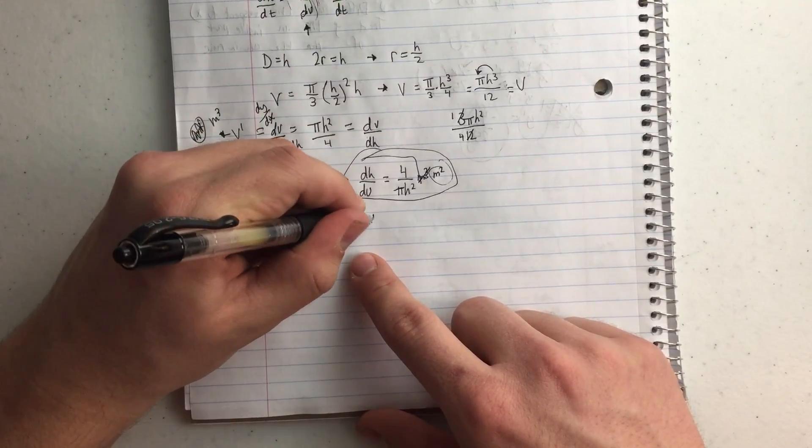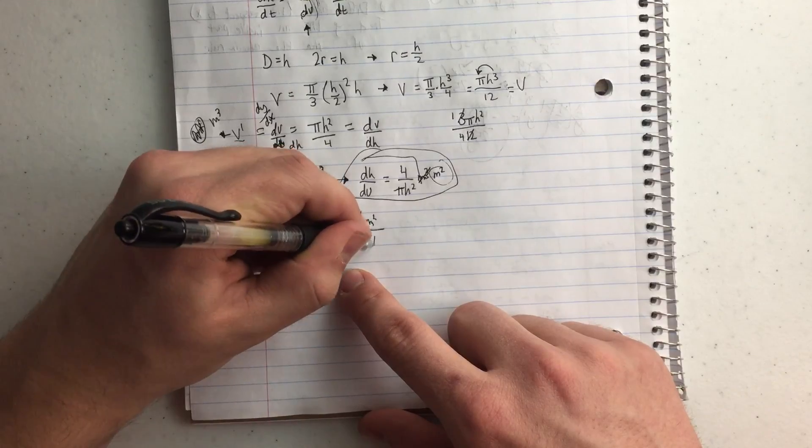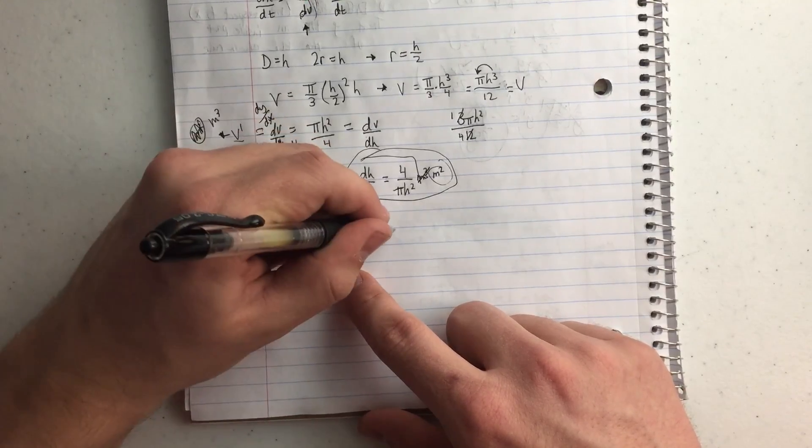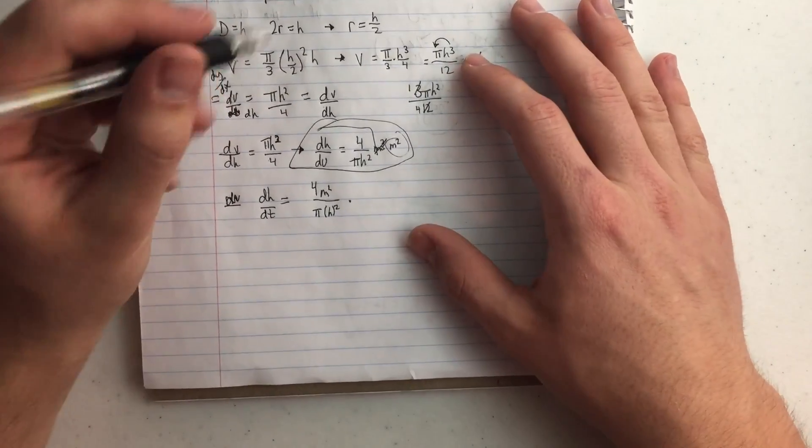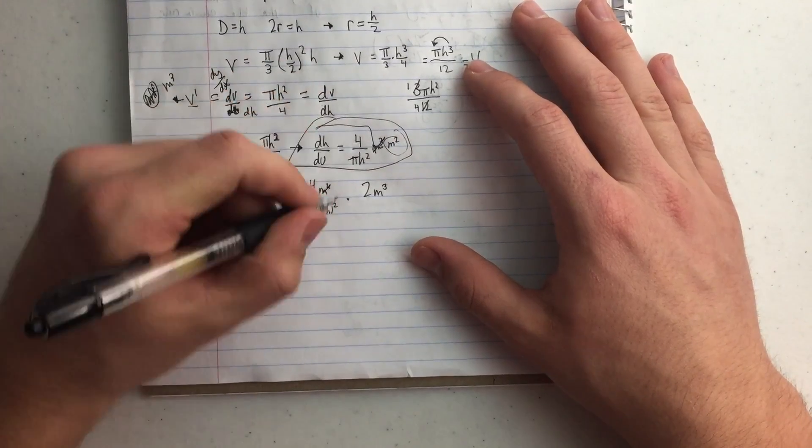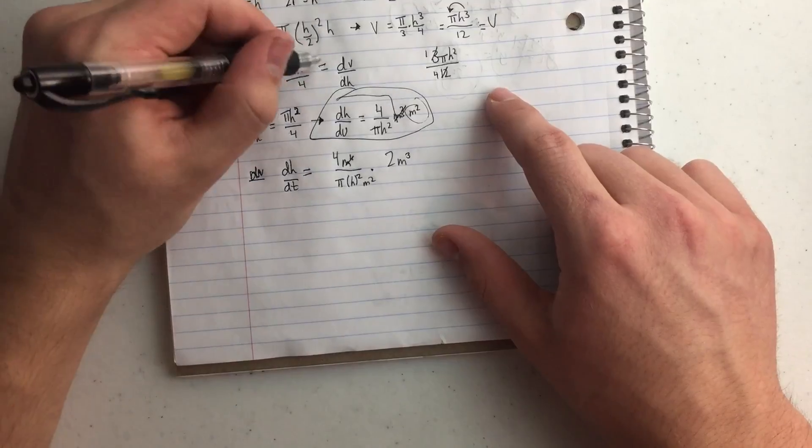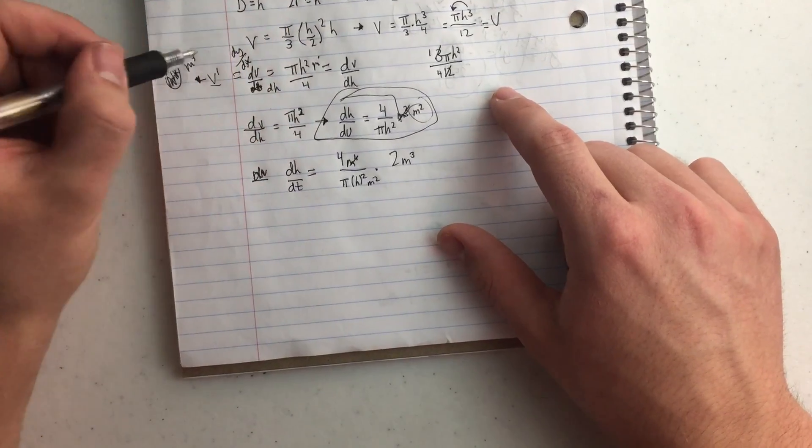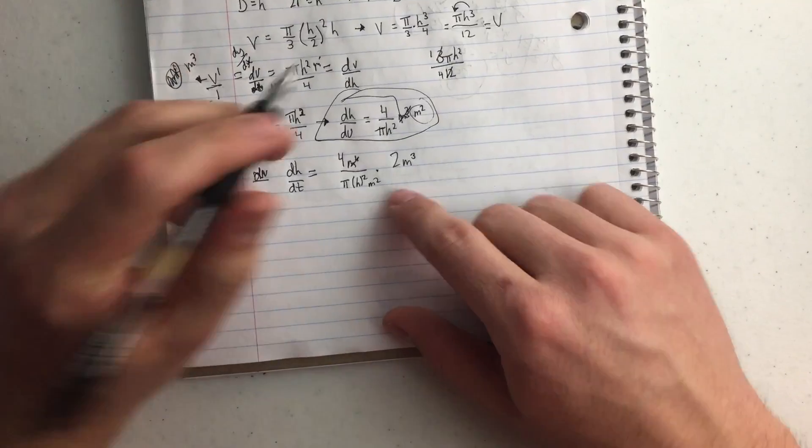So that's going to be 4 meters squared over pi h squared times my dv over dt, my change in volume over my change in time. So 2 meters cubed. That's going to be on the bottom. And the reason it's on the bottom is because it would be on the top with the h here, on top, right? Because it's going to be over 1. And so since I flipped it, it's going to be on the bottom.